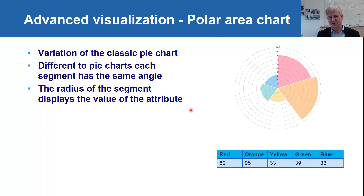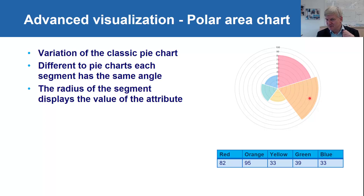We all know the pie chart. Here is a similar visualization where we have five different possible values — red, orange, yellow, green, and blue — split into five equal parts, but the height of each section corresponds to the numerical value. So we can see that yellow and blue have the lowest value of 33.